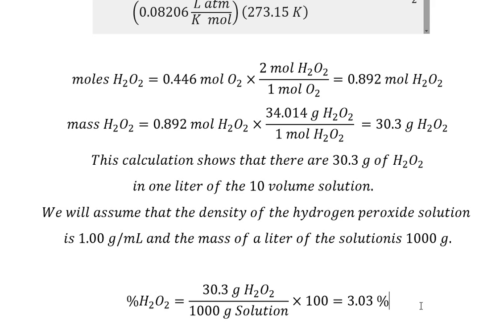And if you had 20 volume, it would be 6%. 30 would be 9% and 40 would be 12%. So this is a nice little calculation that you can use to demonstrate gas laws and stoichiometry.